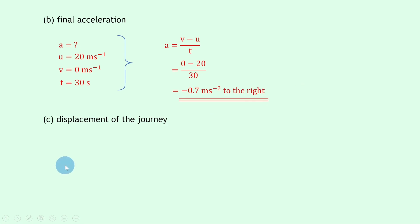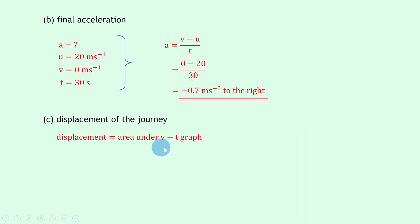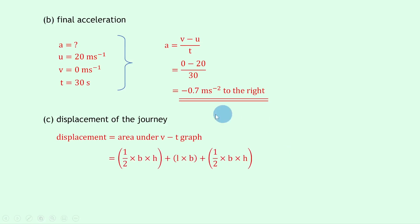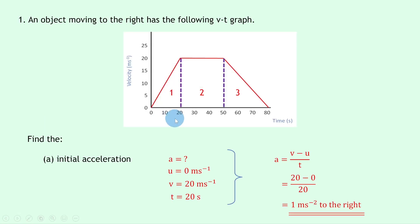Part C says to find the displacement of the journey. From a velocity-time graph, displacement equals the area under the graph. We have a triangle, followed by a rectangle, and then a triangle, so the total area is: (½ × base × height) + (length × width) + (½ × base × height).